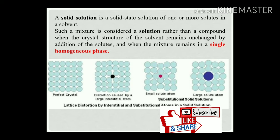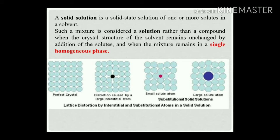If the solute atoms have a smaller size, they are represented as small solute atoms forming an interstitial solid solution. If the solute atoms are larger, they are large solute atoms. So smaller solute atoms make an interstitial solid solution, and same-size solute atoms make a substitutional solid solution.